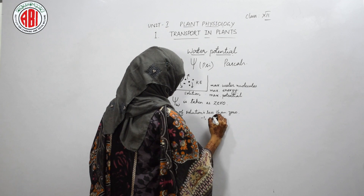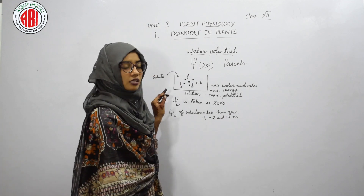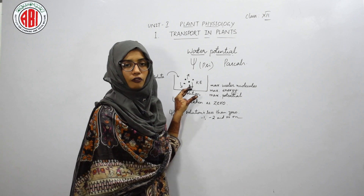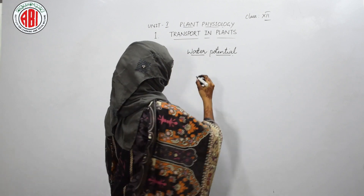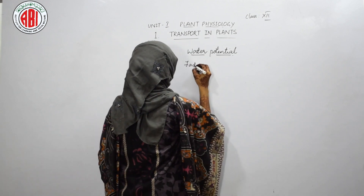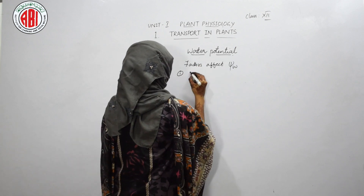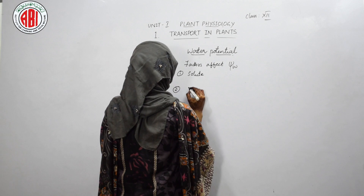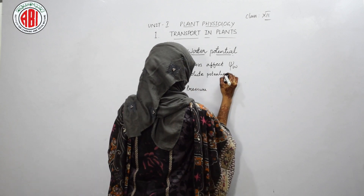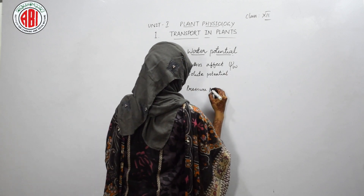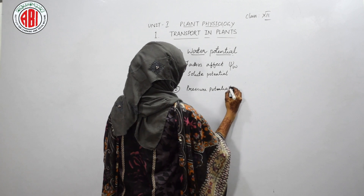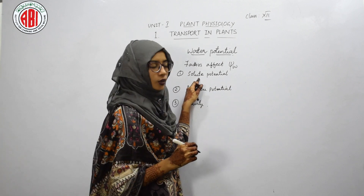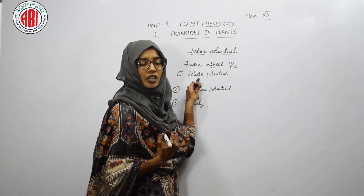We can take water potential values like minus 1, minus 2, and so on for solutions. There are three factors that can affect water potential: solute potential (or solute concentration), pressure potential, and gravity.